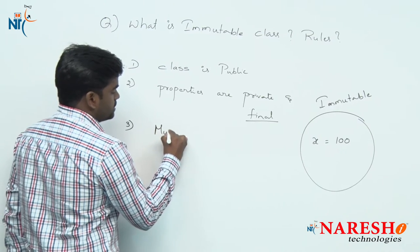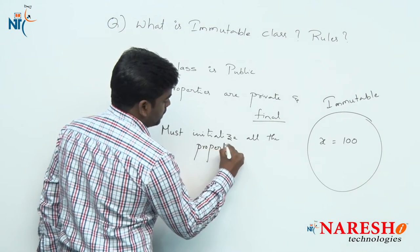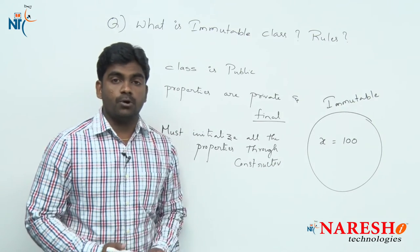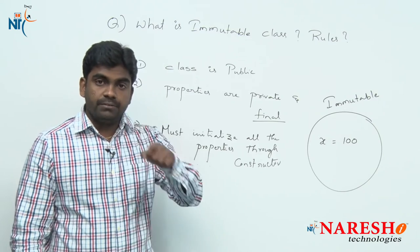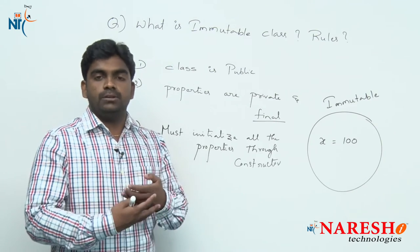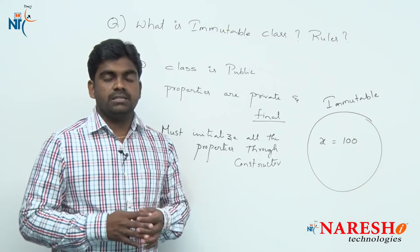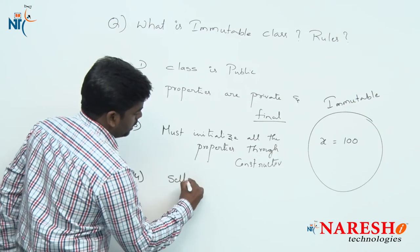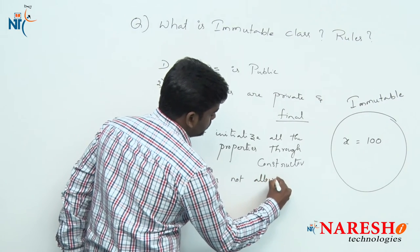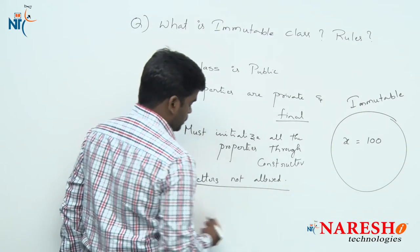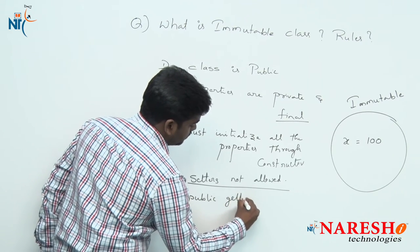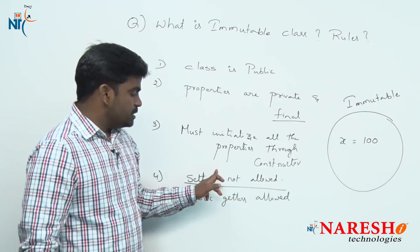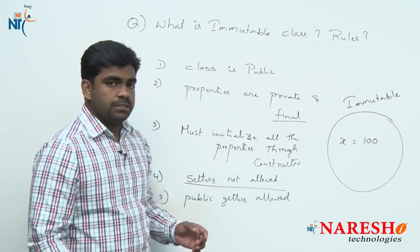The third rule: you must initialize all the properties through the constructor. When we call the constructor in the process of object creation, whatever initialization is required for the object, you have to pass through the constructor only, because setter methods are not allowed. After object creation, if you want to set values — strictly not allowed. Only public getter methods are allowed, because getter methods are to access information, not to modify it.